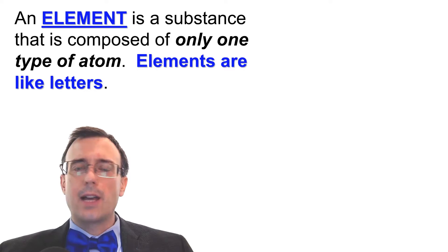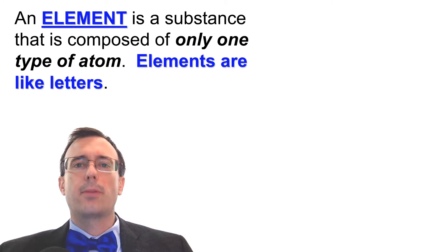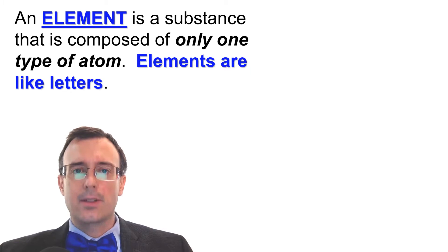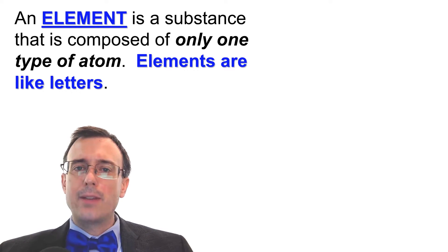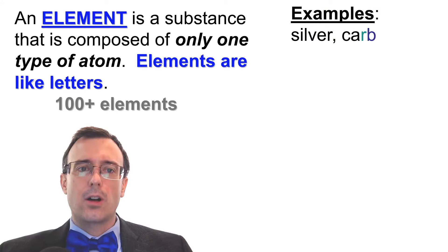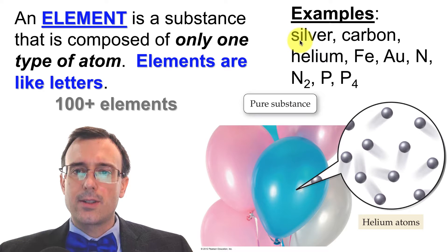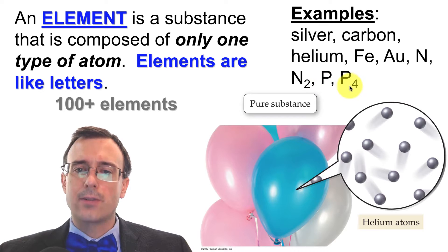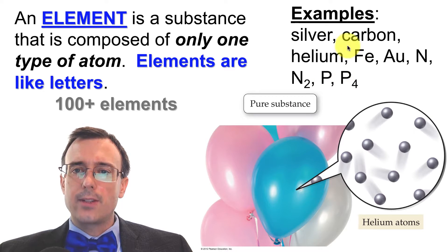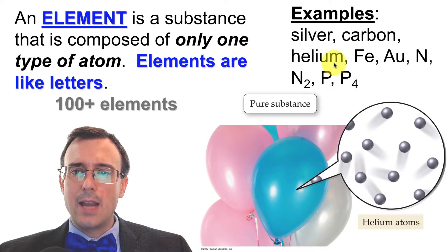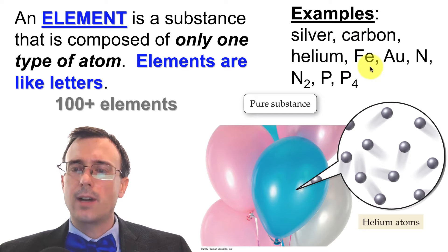Let's first focus on elements. An element is a substance that is composed of only one type of atom. Elements are like letters — they are your basic building blocks of matter. There are over a hundred different elements known, and scientists are still trying to create new elements today. A few different examples of elements are silver, carbon, helium, iron, gold, nitrogen, and phosphorus. All of these are found on the periodic table. Sometimes you might see an element written by its full name, like helium, or sometimes just its symbol, like Fe, which is the symbol for iron.